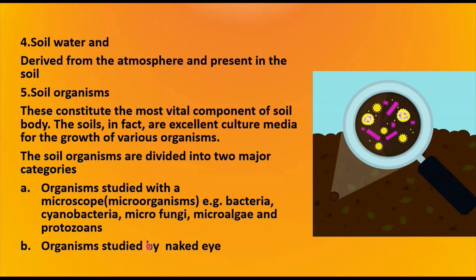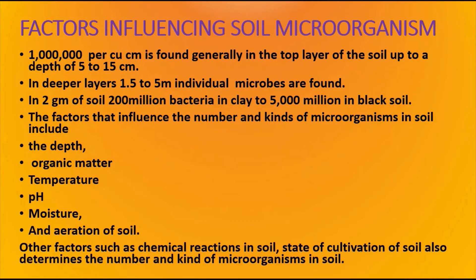Soil organisms are divided into two categories: organisms studied with a microscope — such as bacteria, cyanobacteria, micro fungi, micro algae, and protozoa — and organisms studied by the naked eye, mostly animals, some of which are even quite large. Regarding factors influencing soil microorganisms, nearly 10 lakh microorganisms per cubic centimeter are found in the top layer of soil. After a depth of 5 to 15 centimeters, in deeper layers of 1.5 to 5 meters, individual microorganisms are found in 2 grams of soil — for example, 200 million bacteria in clay and 5,000 million in black soil.